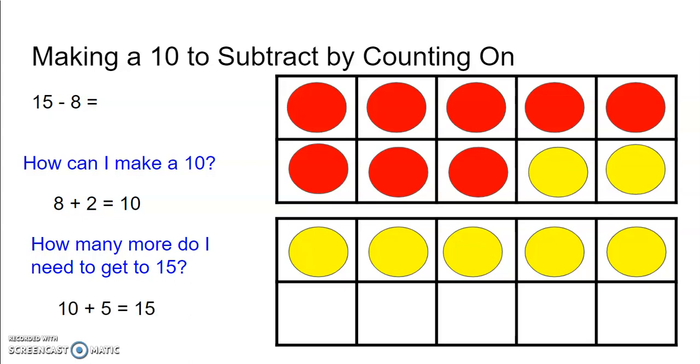So now that I made it to 15, I can count how many I added to the 8 to make 15. So I can count those yellows. 1, 2, 3, 4, 5, 6, 7. So 15 minus 8 is 7.